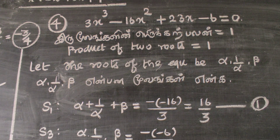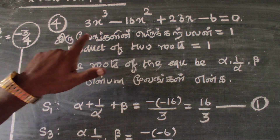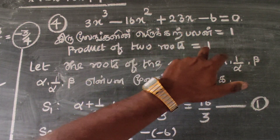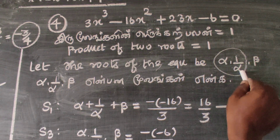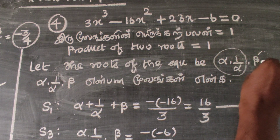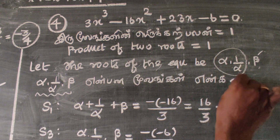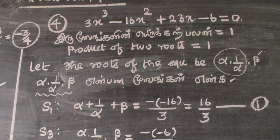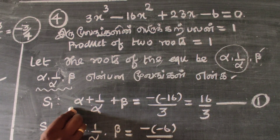Since two roots are reciprocal to each other, if one root multiplied by the other is equal to 1, then the two roots are reciprocal. Let the roots of the equation be α, 1/α, and β.